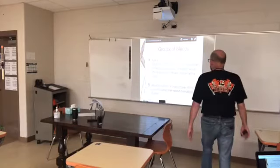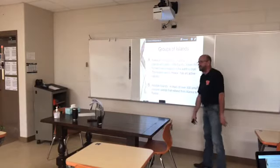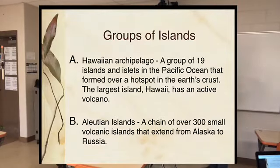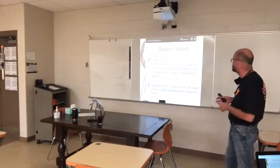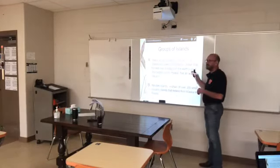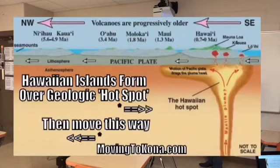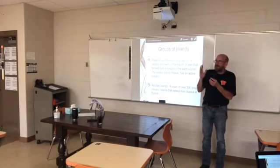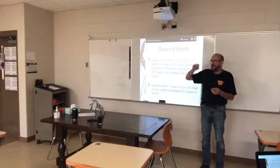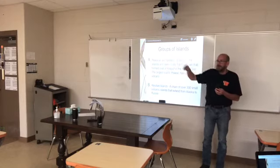Let's talk about some of the groups of islands in the Americas. You have the Hawaiian archipelago — an archipelago is just a collection of islands, usually volcanic. We've talked about these before: they formed over a hot spot, a spot where magma is seeping up and becoming lava and settling. But as the plates have moved, that hot spot hasn't, so you have these old volcanoes sliding down and you get this line of islands.